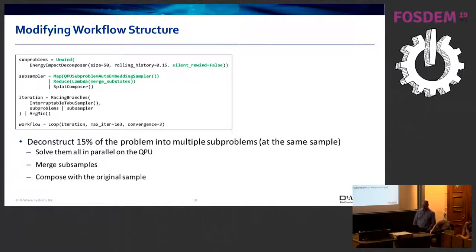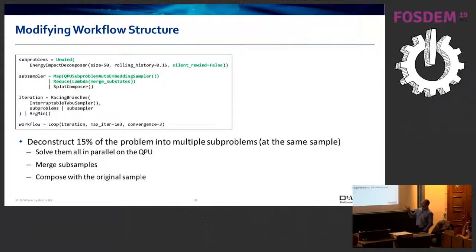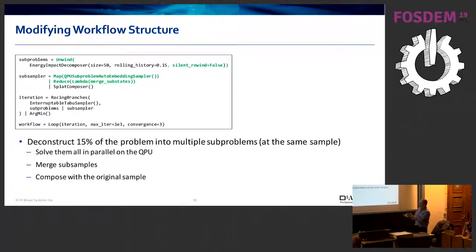You can also easily modify the structure. Let's say instead of running one sub-problem per iteration, let's unwind N sub-problems depending on the size of the problem — the size 50 there is the size of the generated sub-problem, which will then be mapped onto and solved on the QPU. For example, if we're solving a thousand-variable problem, on each iteration you'd have roughly seven sub-problems. You would run those seven sub-problems in parallel on a QPU using a map-reduce, running the same set of sub-problems to seven parallel executing QPU sub-sampler blocks.